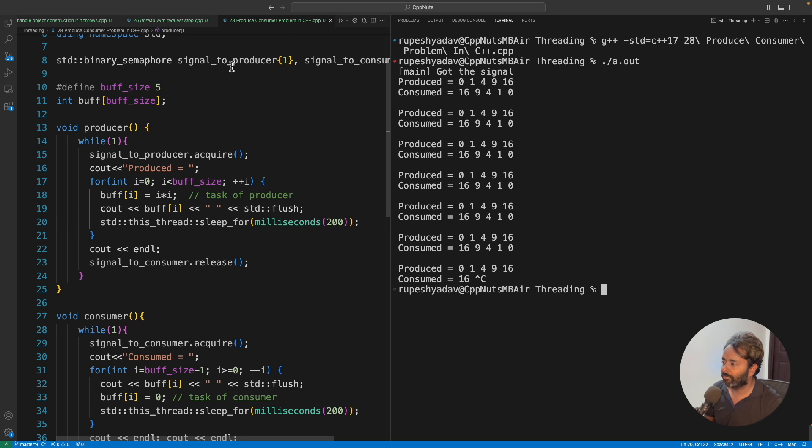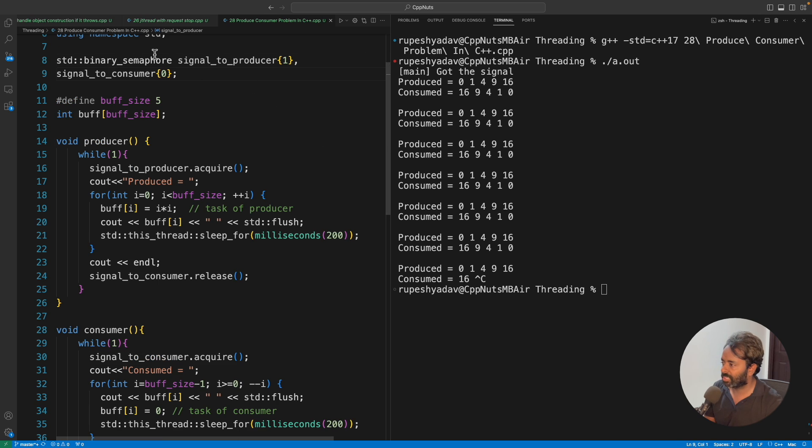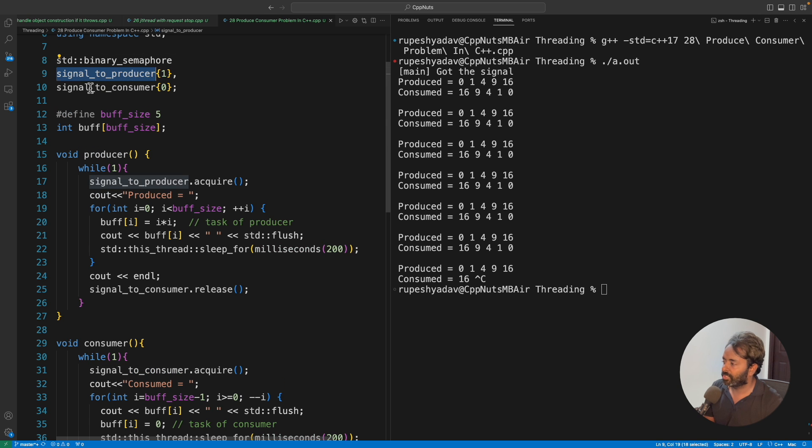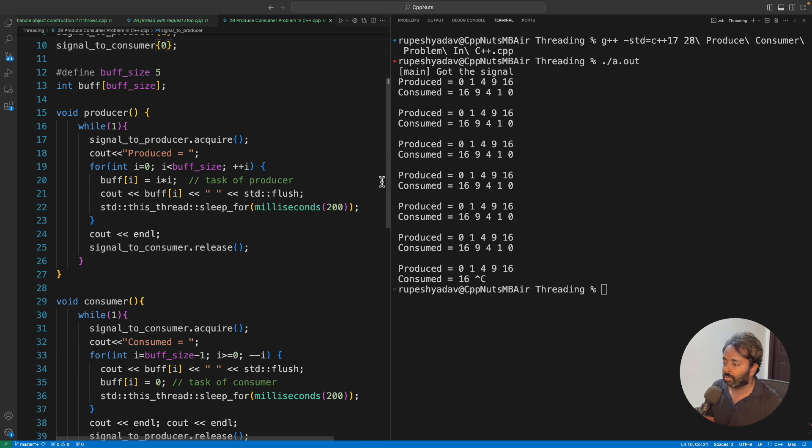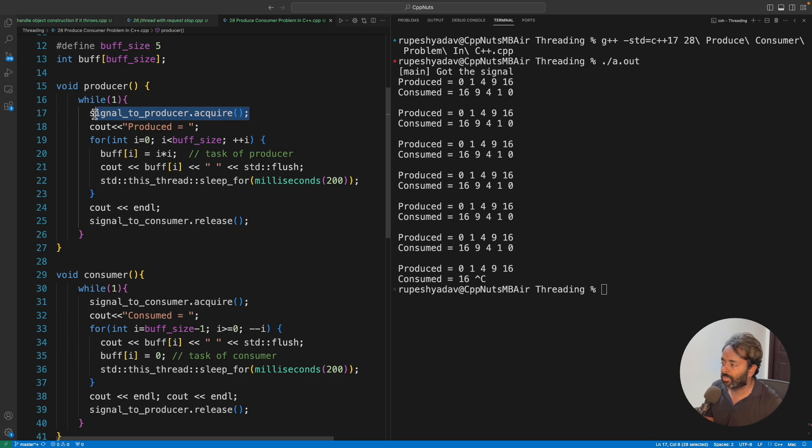Now pause the video and try to understand this piece of code. I told you we will use two variables. These are the values of those variables. Signal to producer is initially one and signal to consumer is actually zero. This is the code as we saw. Producer will try to acquire first and it will be able to acquire because we have kept the value one. Now it will be able to decrement it. And then this is some sort of simulation like what this producer is doing. It will just do some task and fill this buffer and I'm just simulating this using this little bit delay so that it is taking some time.